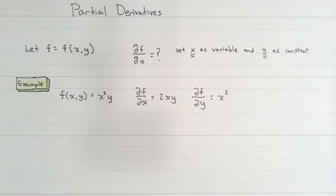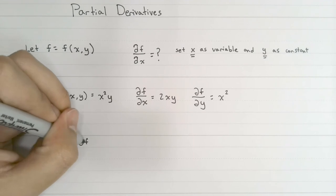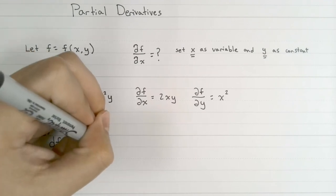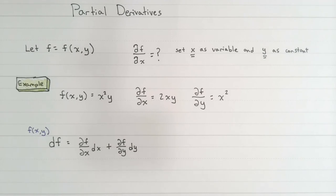Now before we continue, let's talk a little bit about what a change in f, so df means, a total change, not a partial change. If we let f be a function of x and y, then a change in f, a small change in f, df, will simply be equal to the partial change in f with respect to x times an infinitesimally small change in x plus the partial change of f with respect to y times an infinitesimally small change in y.